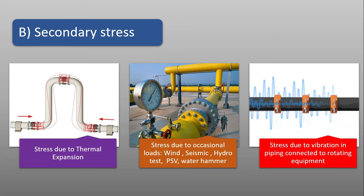Stresses due to vibration in piping connected to rotating equipment are dynamic stresses. Whenever a pipe is connected to a nozzle of a rotary equipment like a pump, compressor, or turbine, that pipe will always be subjected to continuous vibrations at certain frequencies. The supports provided to that kind of pipe should be flexible, like a spring, because they must give rigidity to the pipe while also absorbing the vibrations produced by the rotating equipment.